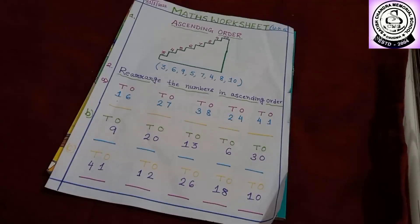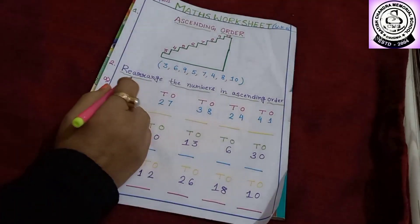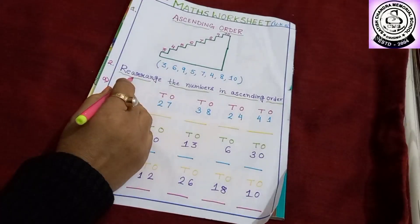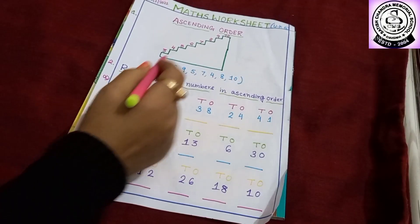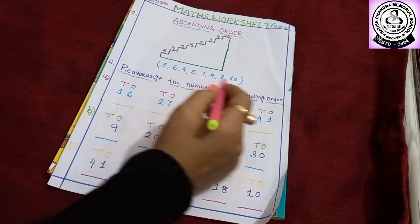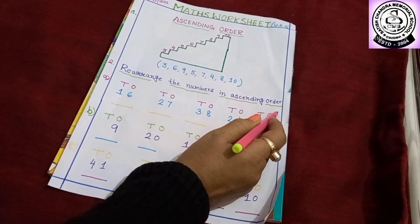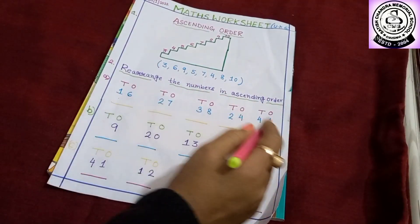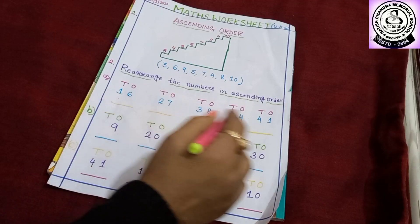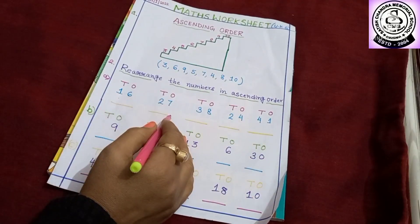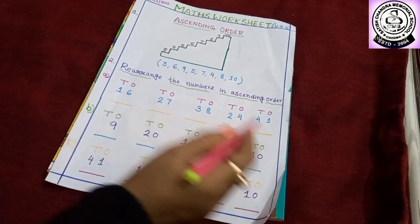So, let's move to the next part. Let us read the heading together: rearrange the numbers in ascending order. That means here you can see I have written some numbers and you have to arrange them in ascending order.